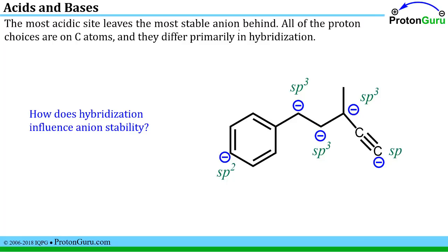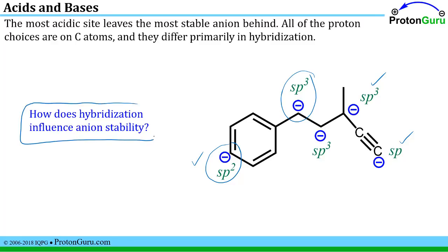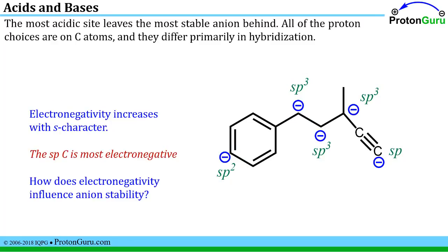Redrawing as conjugate bases, we see the different anions that would be left behind. They differ in hybridization: we have an SP hybridized carbon, some SP3 hybridized ones, and an SP2 hybridized one. From lesson 1.6, hybridization influences electronegativity — the more S character an atom has, the more electronegative it is. So the SP hybridized carbon is the most electronegative, and the SP3 hybridized carbons would be the least electronegative.